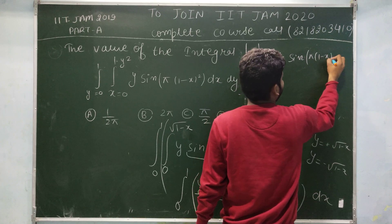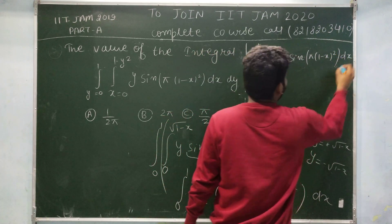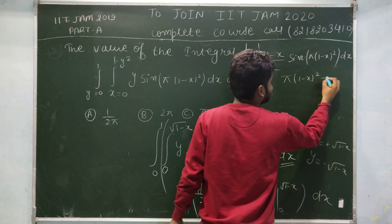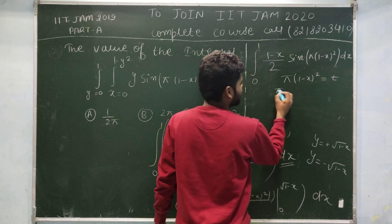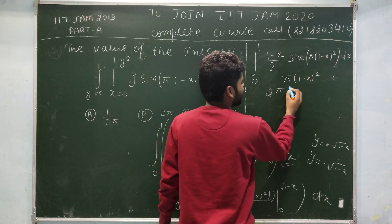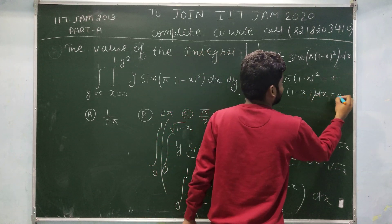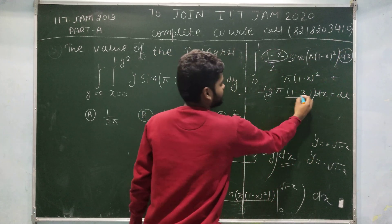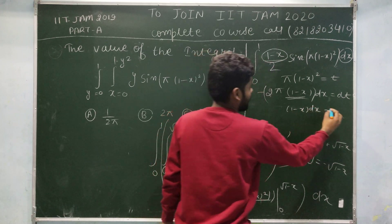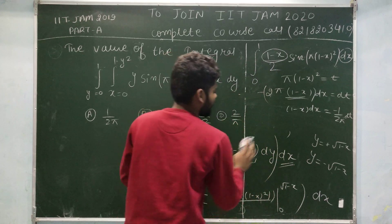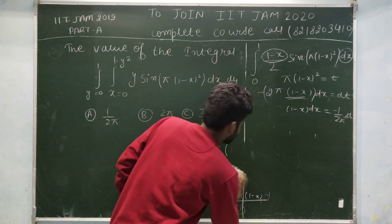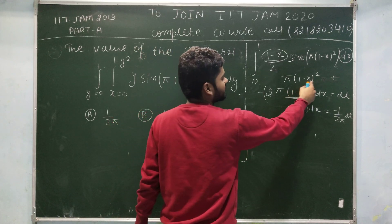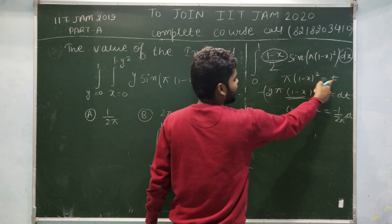Now for this integration, put t = π(1-x)². Differentiating both sides: π · 2(1-x)·(-dx) = dt, so (1-x)dx = -1/(2π) dt. The limits also change: when x equals 0, t equals π; when x equals 1, t equals 0.